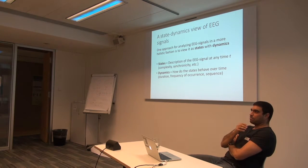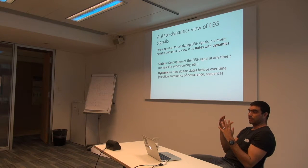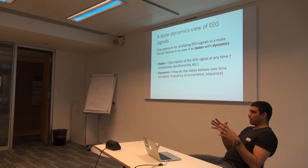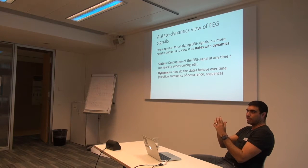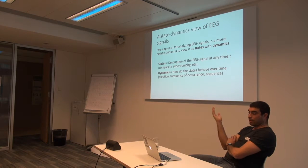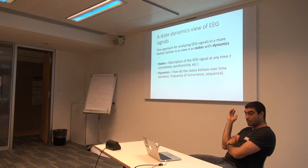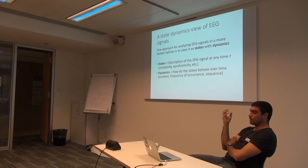States can be many different things. For example, a state can be described by the complexity of the EEG signal. There are studies that look at how easily EEG data can be compressed — how much compression is in there, which is a related measure to complexity. We can also look at synchronicity. With all these different descriptions about the states, we can look at how they change over time — the dynamics.